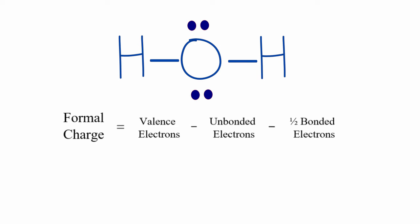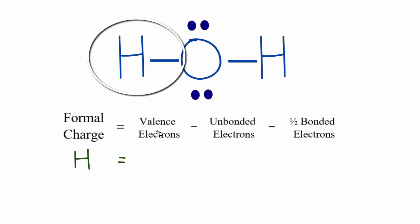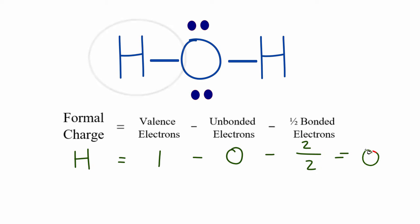We'll start with H₂O — water. Let's calculate the formal charge for hydrogen. Hydrogen is in group 1 and has one valence electron. All of hydrogen's electrons are involved in the chemical bond, so there are zero unbonded electrons. Then we take one half of the bonded electrons — the bond line represents a pair of valence electrons, so we have two. One minus zero minus one gives a formal charge of zero for hydrogen.